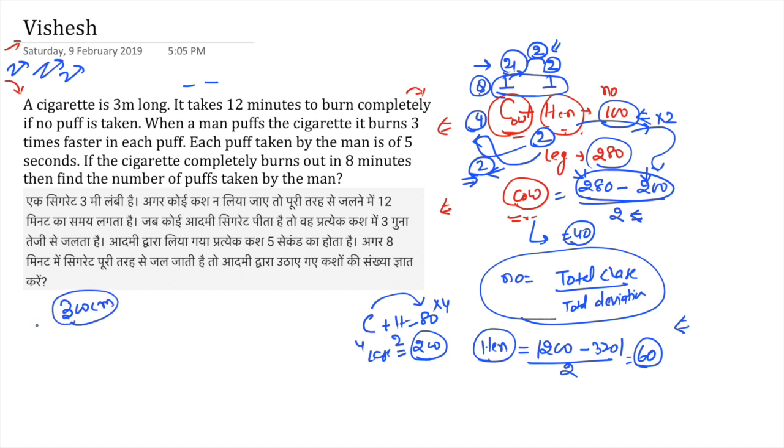Now let's solve this question. The cigarette is 300 centimeter. That is nothing but the total work. Which you do in 12 minutes without puff. No puff you do in 12 minutes. So tell me, in no puff how much work is done? In no puff the work done is 300 by 12 is nothing but 25 work done per minute. If you find per minute work done, then no puff work done is 25 per minute. What is puff work done? They said that puff is three times faster. So puff work done is 75.